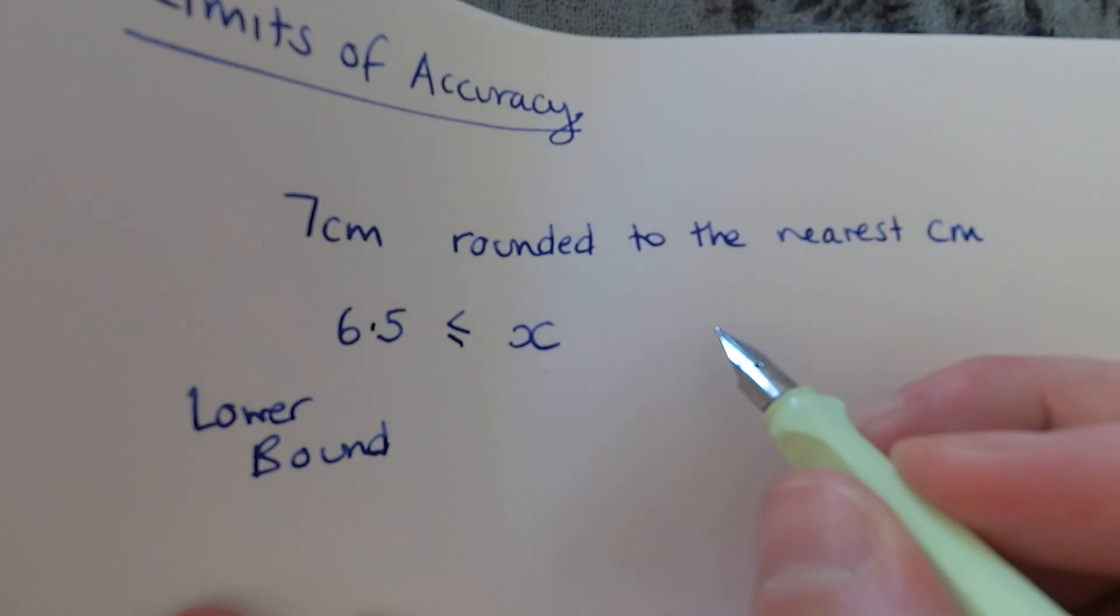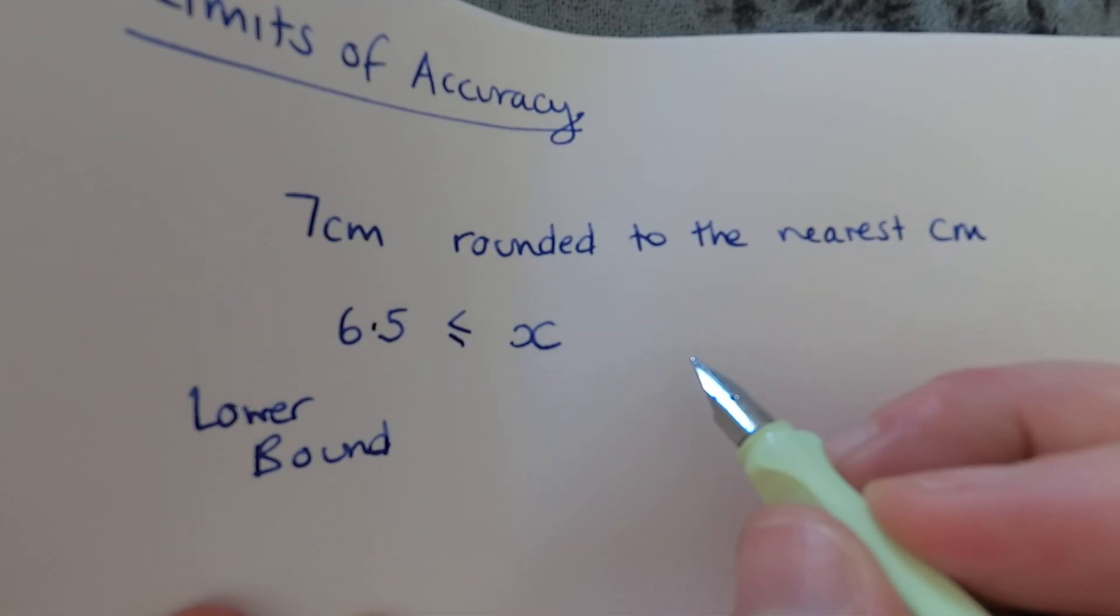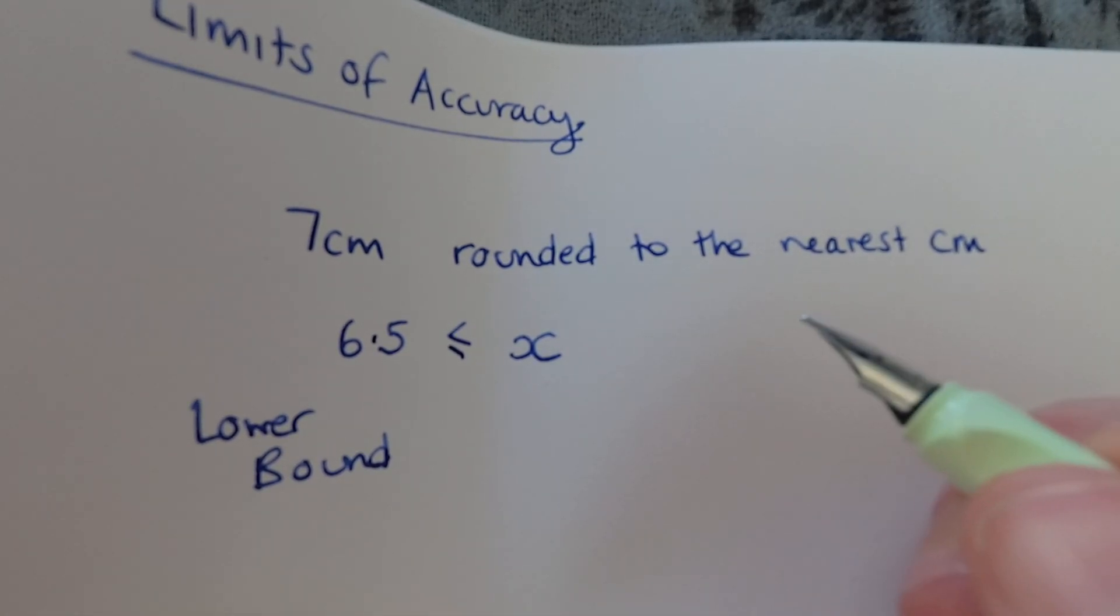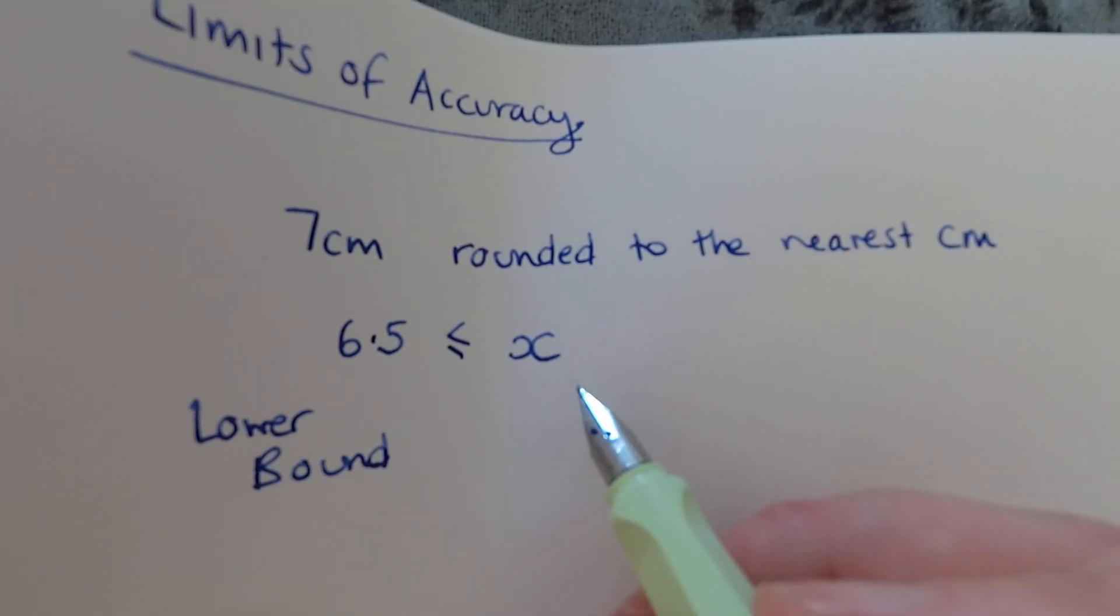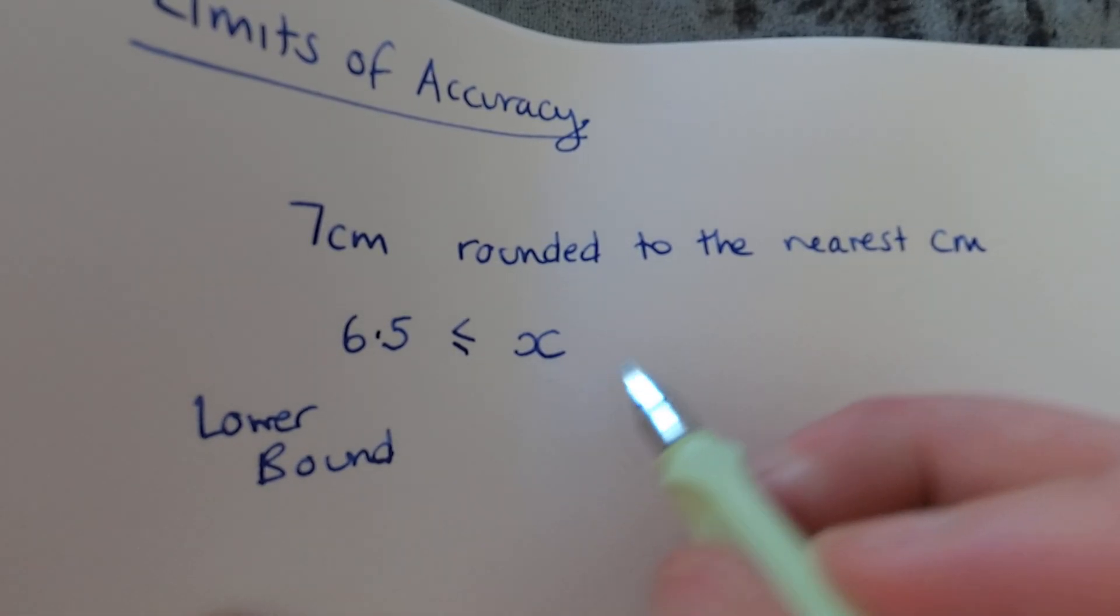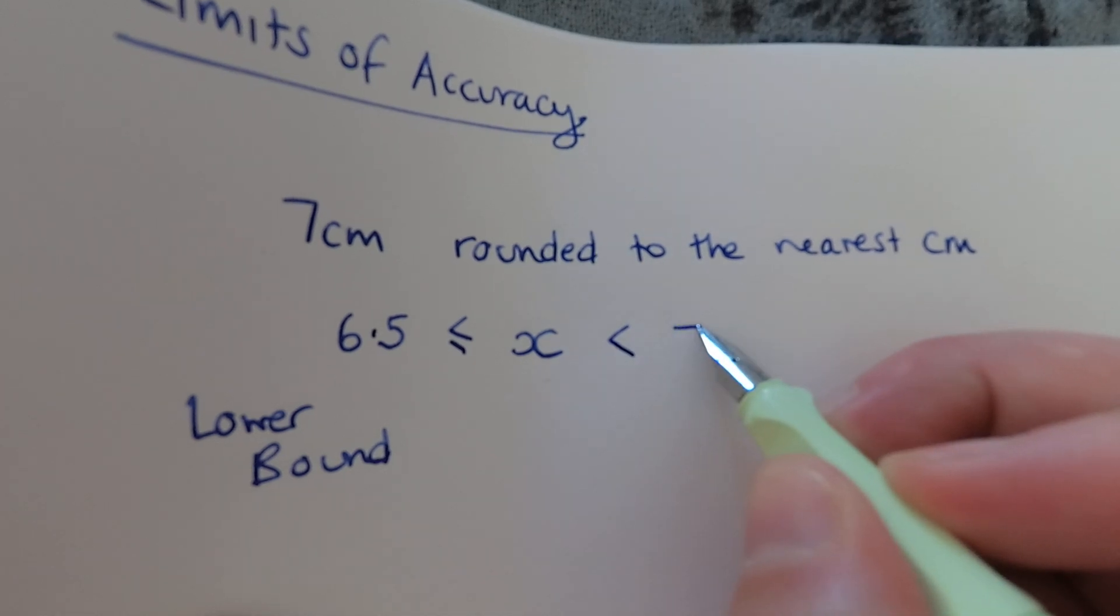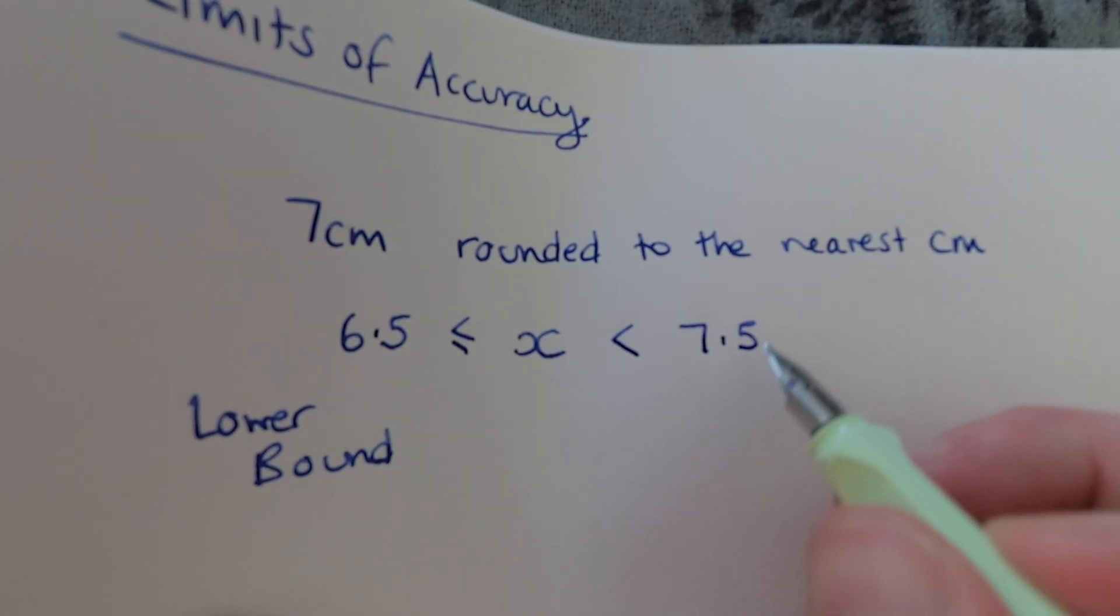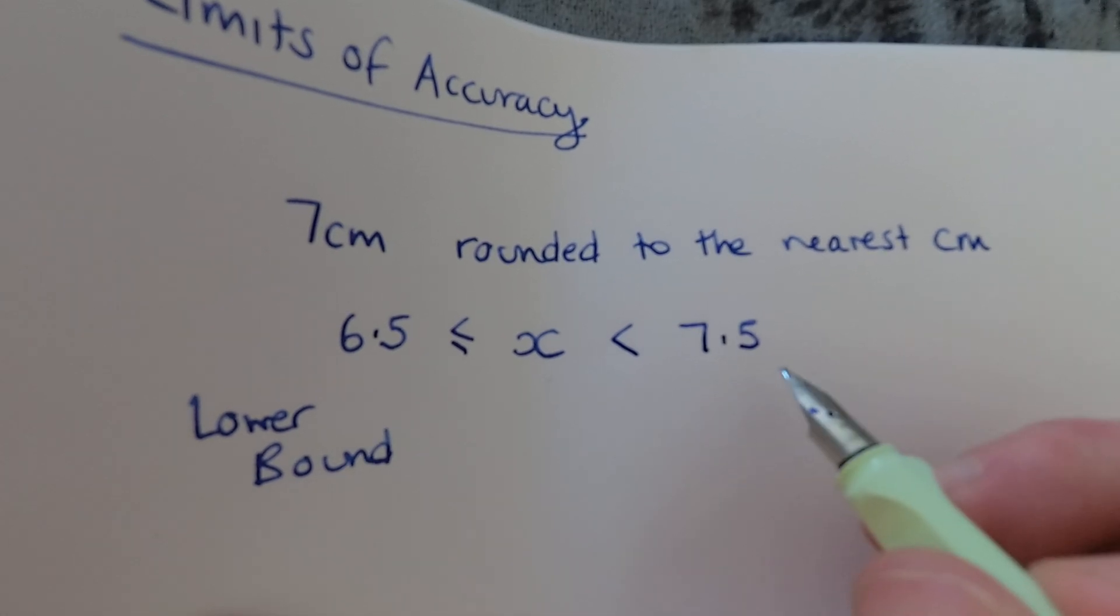Now conversely on the other side of the scale, if the true measurement was 7.5 that would be the smallest amount that would round up to 8, so it can't have been 7.5, it must have been smaller than that. But it could be anything smaller than that, so it could have been 7.499999999, and mathematically that's a bit of a nightmare. So what we say is that the upper bound is 7.5, and I know that rounds up to 8 so it doesn't really make sense, but bear with me.